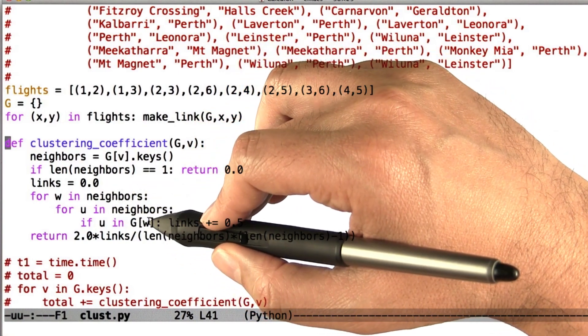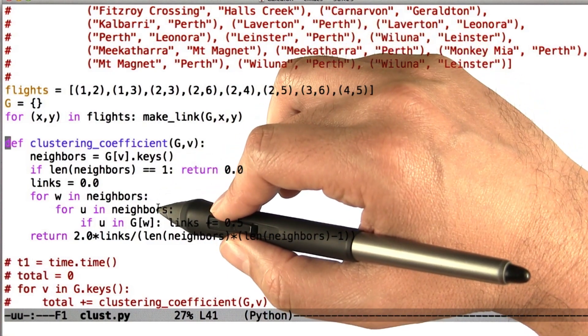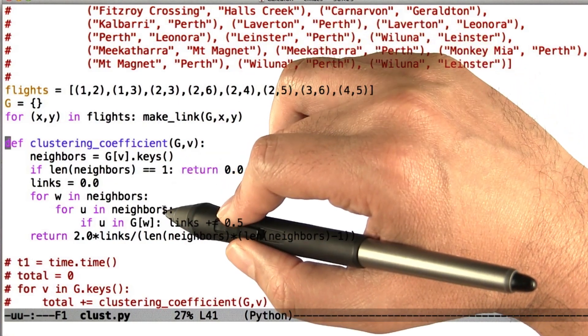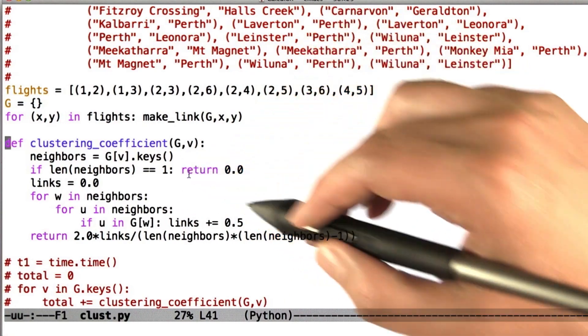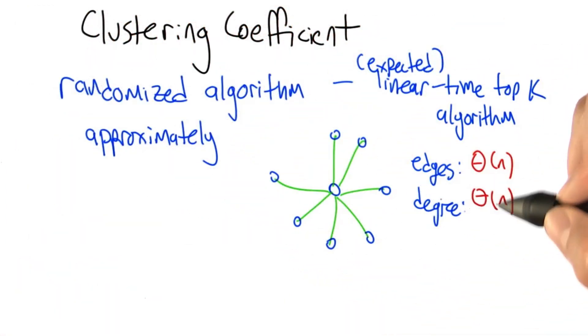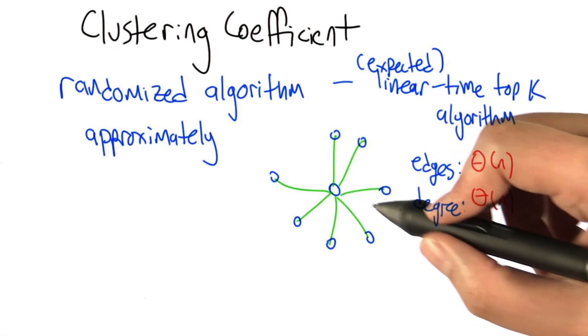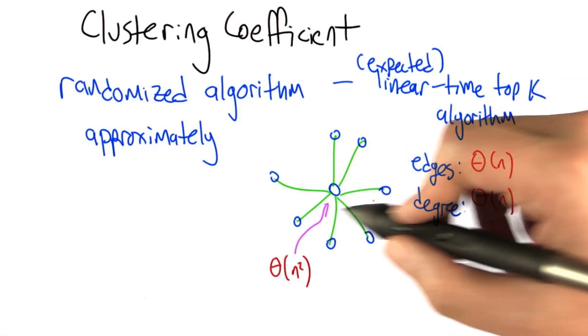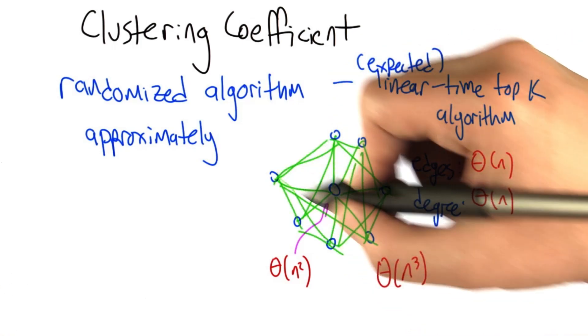That's for each node. We need to look at the square of the degree to actually compute this. If the degree is rather high, if the graph is fairly densely connected, or even if there's just a few nodes that have very high connectivity, like maybe a star graph for example. A star graph has just linear number of edges but it also has linear degree, at least in that one node. Computing the clustering coefficient for that node is n squared. The running time is still pretty high.